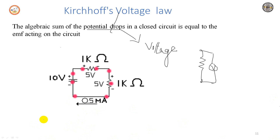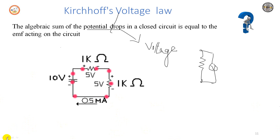The EMF acting on the circuit is 10 volts. The potential drop across one resistor is 5 volts and across another resistor is 5 volts. Put together, the sum of the potential drops is 10 volts in the closed circuit, which equals the EMF of 10 volts acting on the circuit. EMF, or electromotive force, is nothing but voltage or potential. The voltage applied should equal the drop across the resistors in a closed circuit. So the sum of the potential drops — summation of V — is equal to zero.